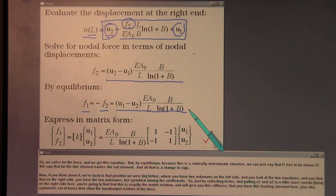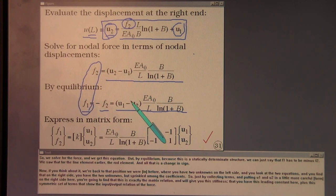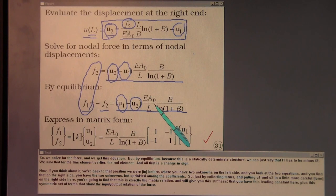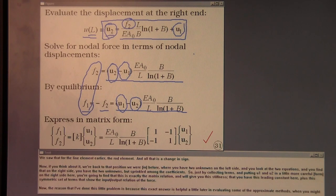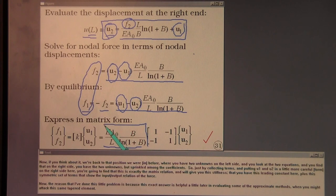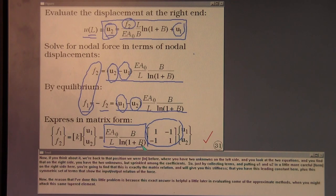Now, if you think about it, we're back to that position we were before where you have two unknowns on the left side, and you look at the two equations and you find that on the right side you have the two unknowns, but sprinkled among the coefficients. So just by collecting terms and putting the u1 and u2 in a little more careful term on the right side here, you're going to find that this is exactly the matrix relation and will give you this stiffness, that you have this leading constant here plus this symmetric set of terms that show the input-output relation of the force. Now, the reason that I've done this little problem is because this exact answer is helpful a little bit later in evaluating some of the approximate methods when you might attack this same tapered element.